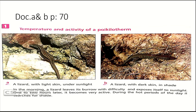We will start with documents A and B, which show the change in color of the lizard as it passes from light to shade. The color changes because under sunlight the lizard needs to reflect light in order to prevent a rapid rise in its internal temperature, so its skin turns clear, as you can see in document A. While in shade, the lizard needs to capture light to heat its body and increase its internal temperature, so its skin becomes dark.